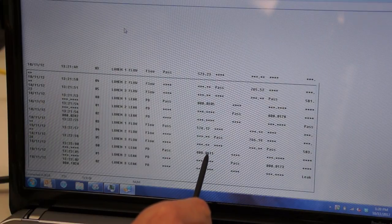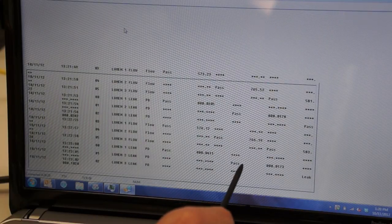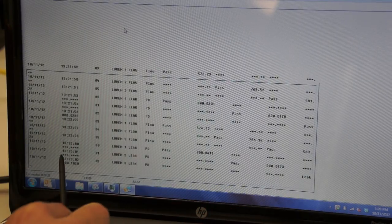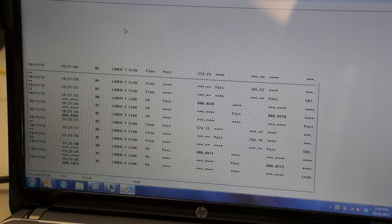Then we had a 0.0411 leak on lumen 1, 0.0173 leak on lumen 2, and we did get a leak failure on lumen 3 with a 0.102 decay. That is at 5 cc per minute.